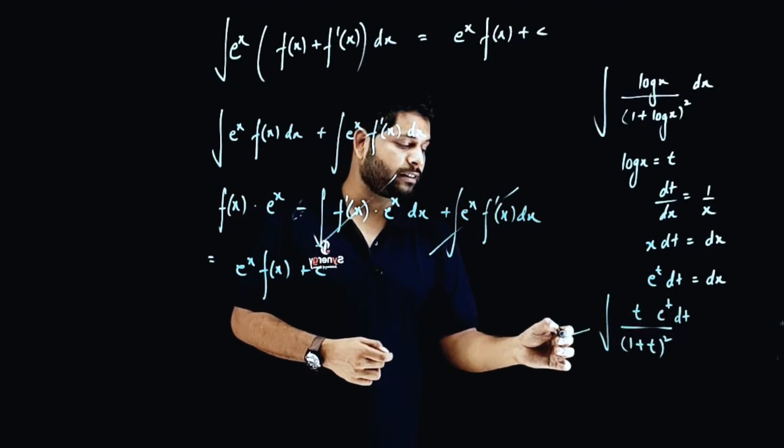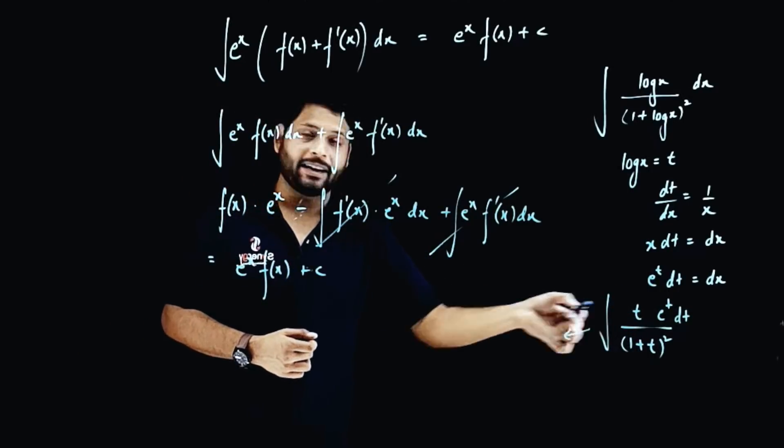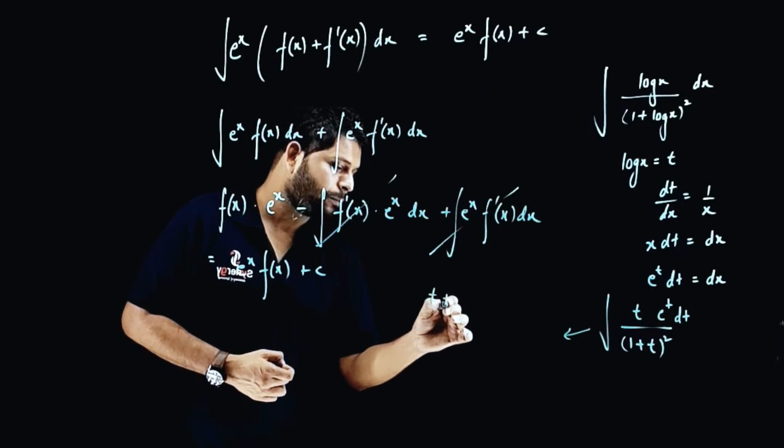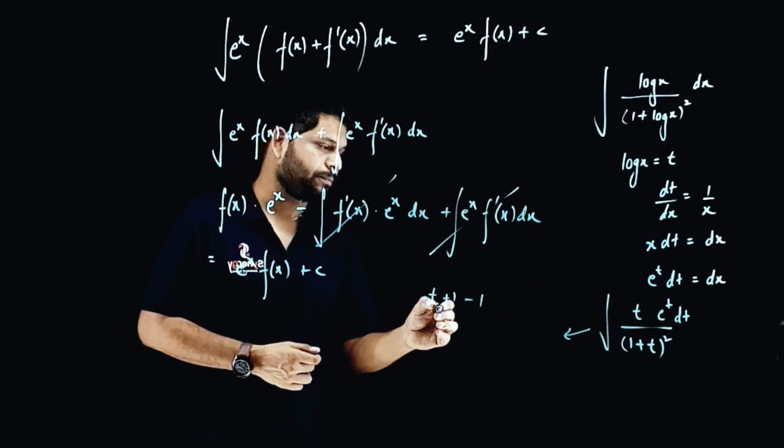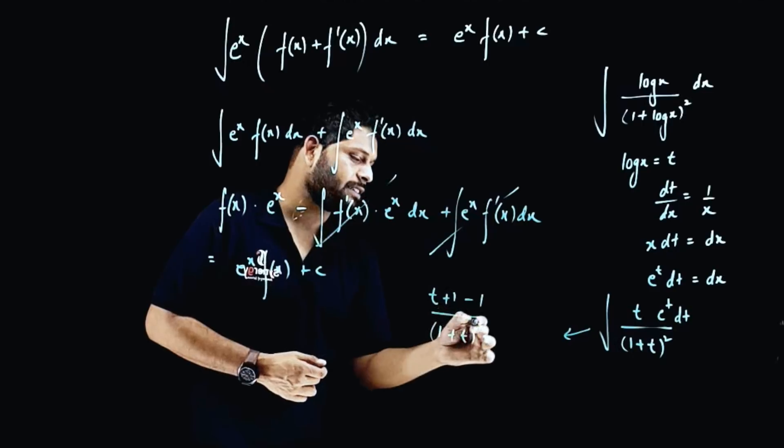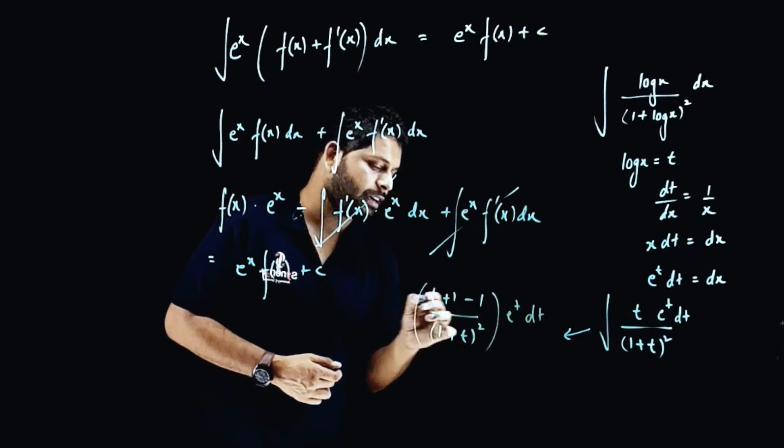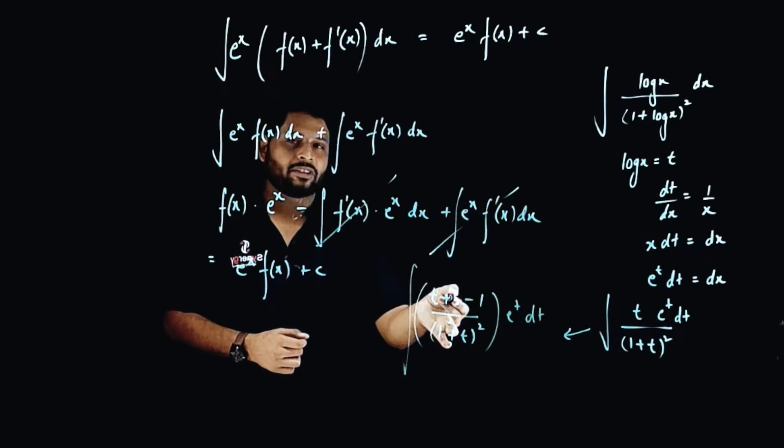Now how to solve such equation? See, I can write it something like t+1 and minus 1. I'm adding 1, subtracting 1, and taking (1+t)^2 as such. e^t is there, dt is there, integral is there. Now I'm just going to take the LCM differently.